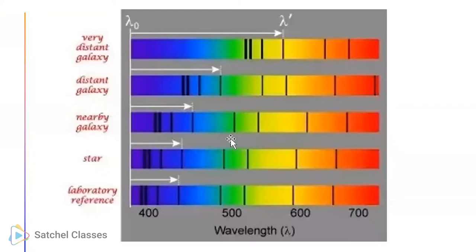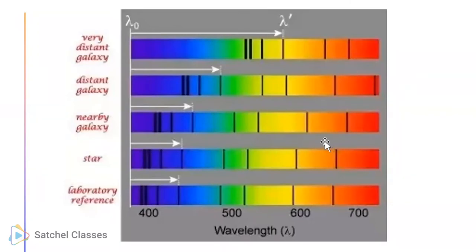These lines are moving towards the red end of the spectrum. The whole effect is called redshift - that's where the word comes from. It's as simple as that. It's because the lines are moving in the direction of the red part of the spectrum.